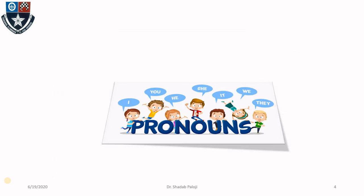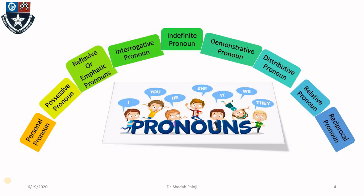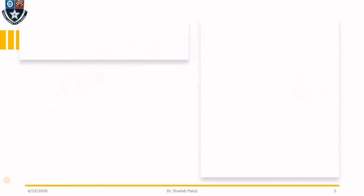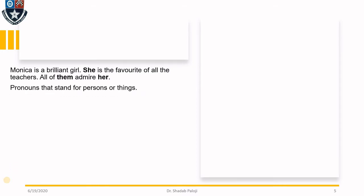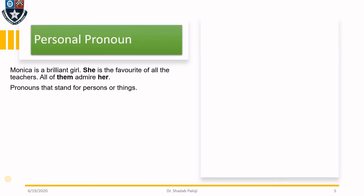Now look at these various forms of pronouns that we will learn today. Look at the statement: Monica is a brilliant girl. She is the favorite of all the teachers. All of them admire her. Now look at the person the pronoun is standing for. She, them, and her — these kinds of words are called as personal pronouns.